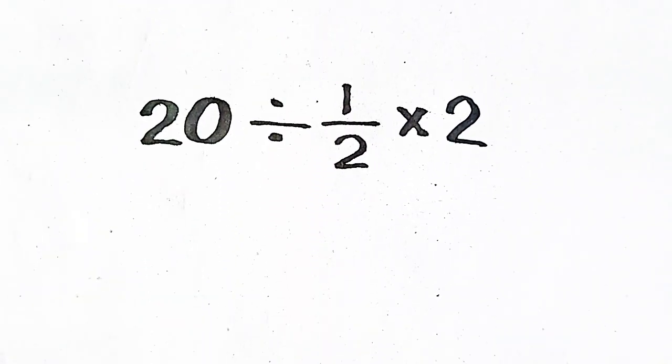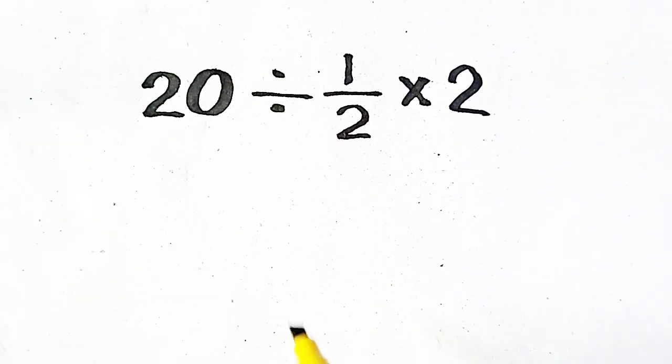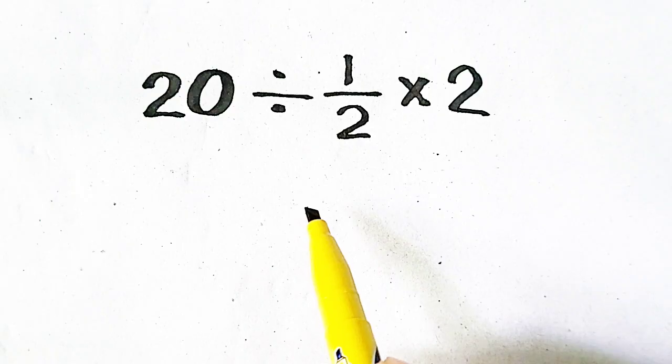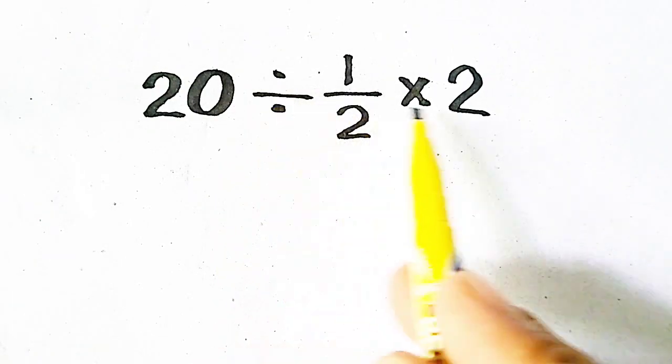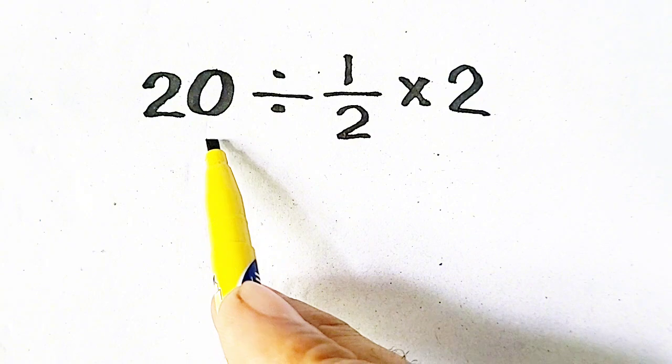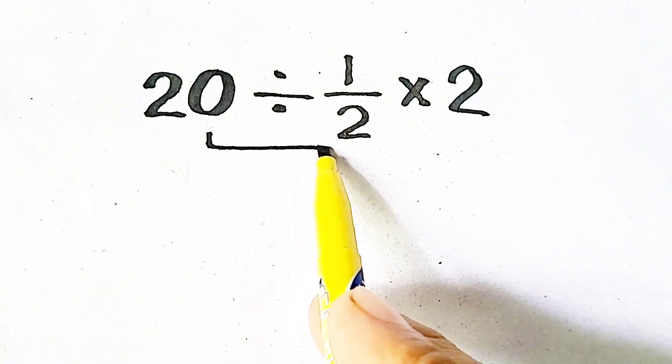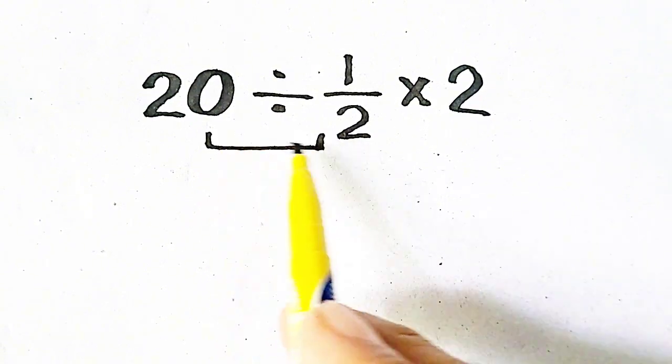Now we will follow the order of operation. First of all, division will be solved, then multiplication. So we have to solve this one first.